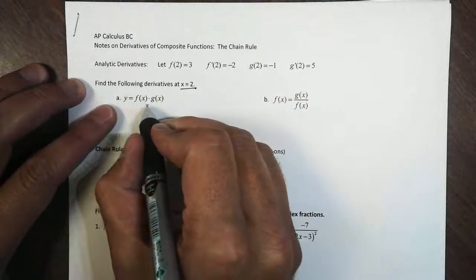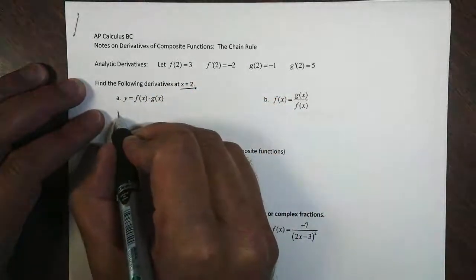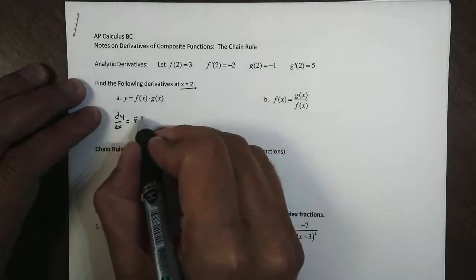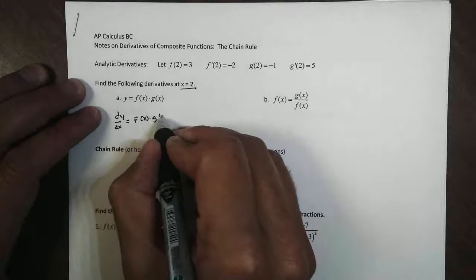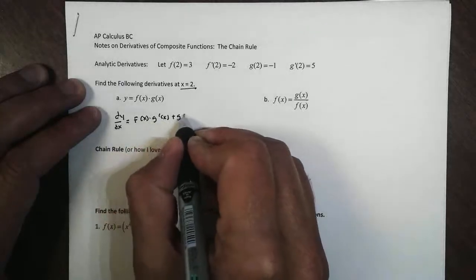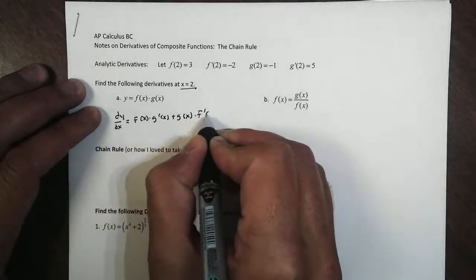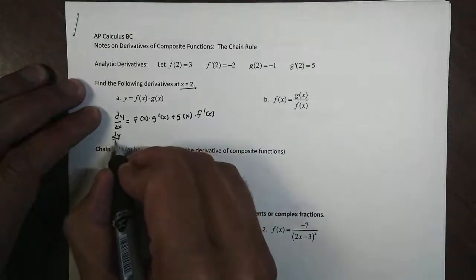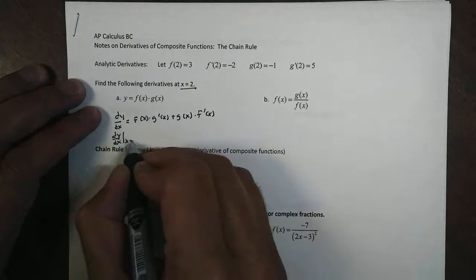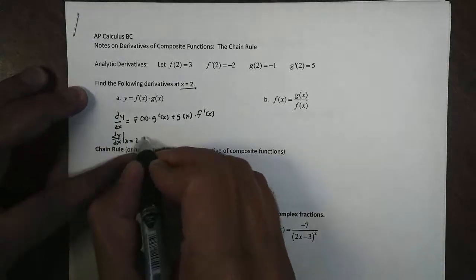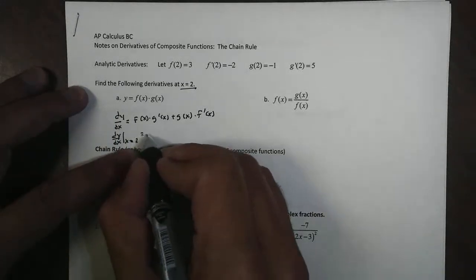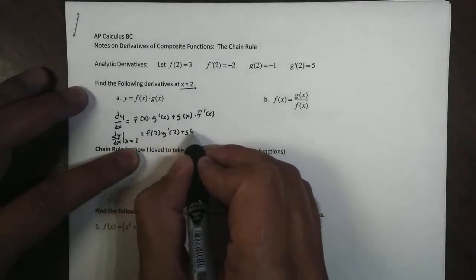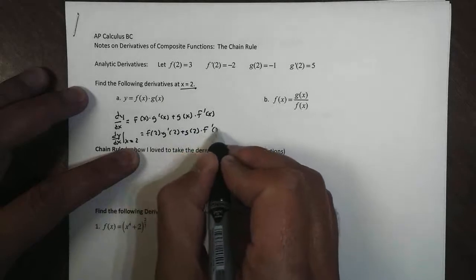For the first one, this is our product rule. So when we're taking the derivative dy/dx, this is the first function times the derivative of the second plus the second function times the derivative of our first. And we want to find at x equals 2, so we can write dy/dx at x equals 2. This becomes f(2) times g'(2) plus g(2) times f'(2).